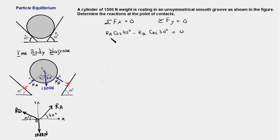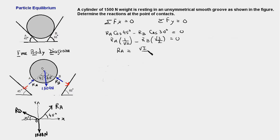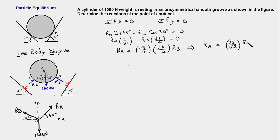This gives Ra times 1 over root 2 minus Rb times root 3 over 2 equal to 0, or Ra equals root 2 times root 3 over 2 times Rb, which simplifies to Ra equals root 3 over root 2 times Rb. So this is our first equation which gives the relationship between Ra and Rb.